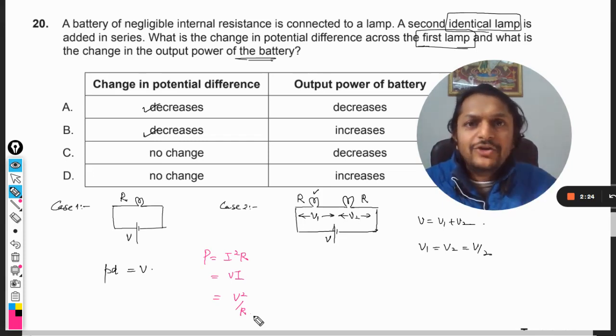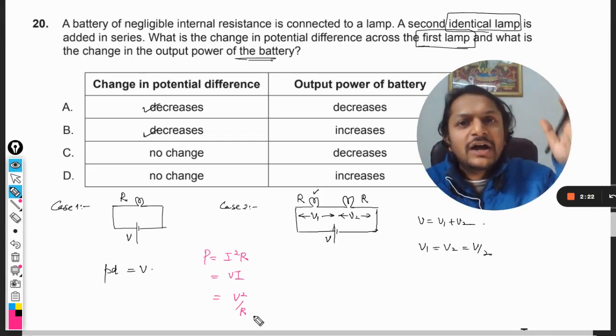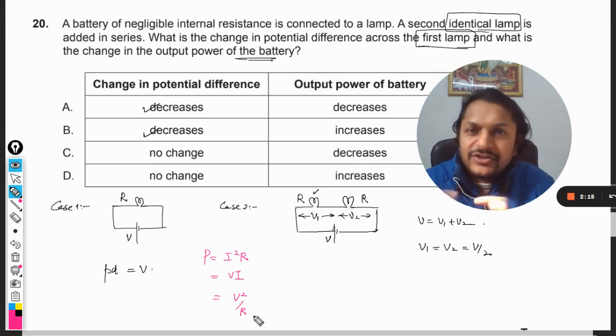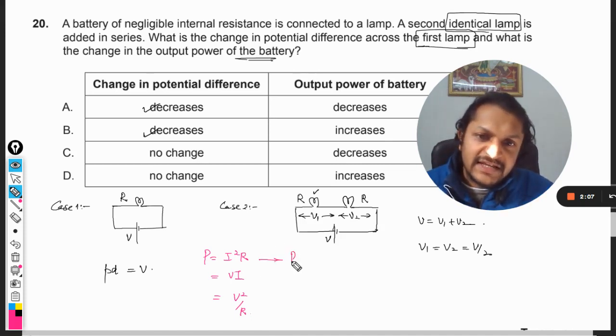There are three different contexts in which these can be used. You cannot use power equals I square R every time - that depends upon the cases. Although all of these are similar formulas and interrelated, there is a context also.